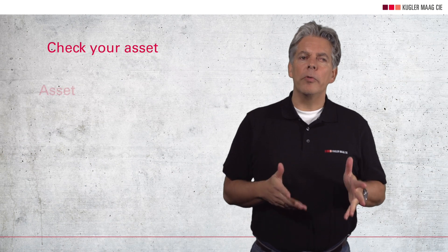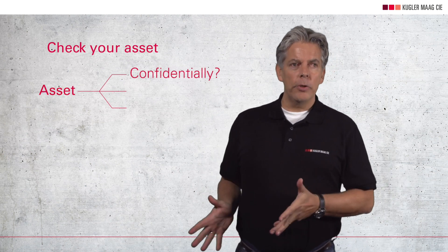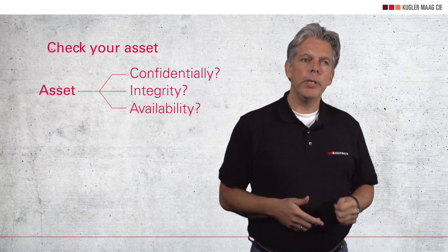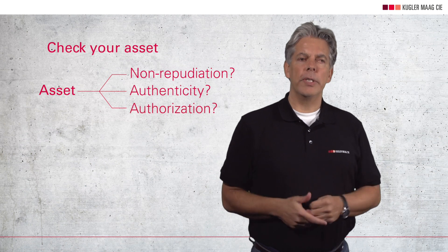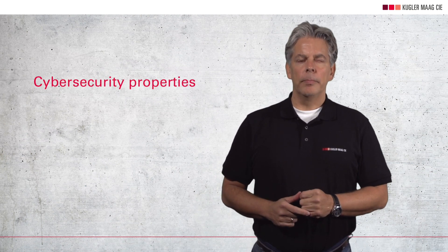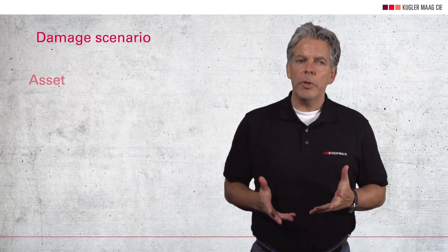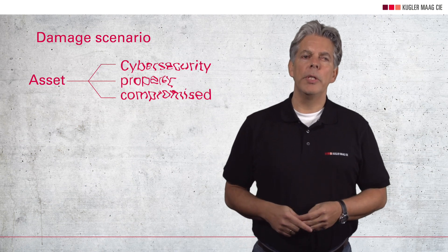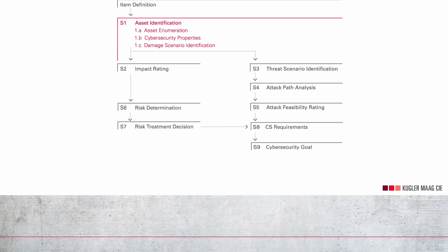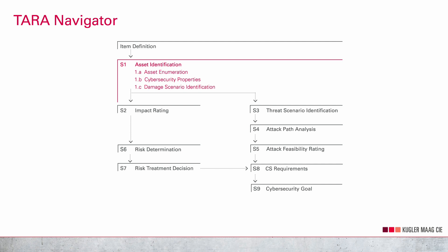What can go wrong? Systematically question each of the assets in terms of confidentiality, integrity, and availability, as well as non-repudiation, authenticity, and authorization. The ISO SAE 21434 standard describes these attributes as cybersecurity properties. You identify the damage scenarios by evaluating what can happen if cybersecurity properties or assets are compromised. This was the asset identification in short.